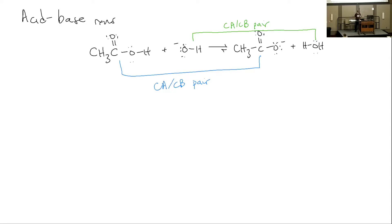Many textbooks do this these days. Where we're going today is we're going to pick up where we left off with arrow pushing, and it is emphatically not bogus — this is the real deal now. We're going to start dipping our toes into arrow pushing in the area of acid-base reactions, which is something you covered to some degree in Gen Chem. We're going to look at a somewhat more advanced perspective, and when we start to use arrow pushing this way, this is not bogus. This is how we will use it all the way through organic chemistry.